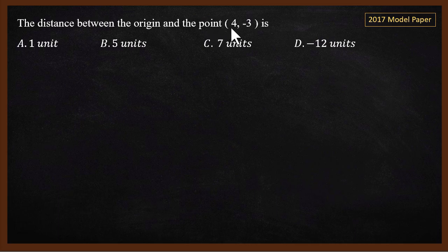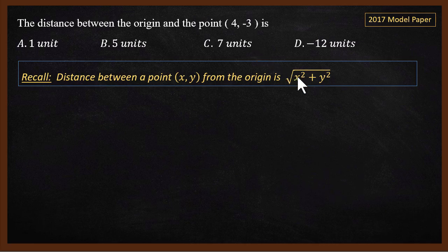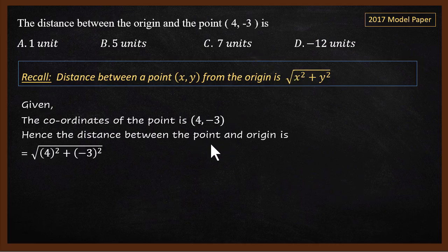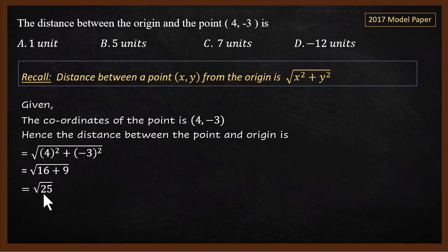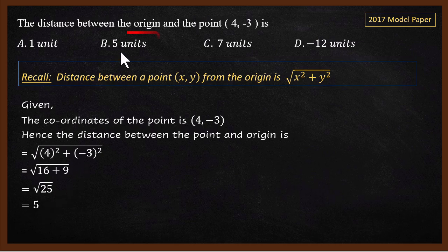The distance between the origin and the point (4, −3) — this was from the 2017 model paper. Using the same formula and substitution: √(4² + (−3)²) = √(16 + 9) = √25 = 5. So the answer is 5, and the answer is B.